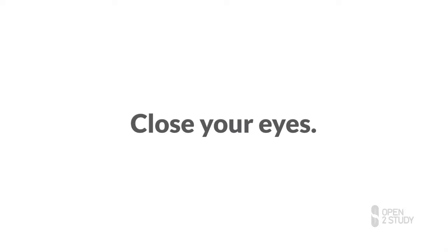Now, scrunch up your eyes tightly. Those dancing lights that you see are caused by stimulation of receptor cells in the back of your eye. Normally, they would be stimulated by light coming from objects around you. These receptor cells are sending electrical signals to the brain, this time to areas involved in the perception of light.